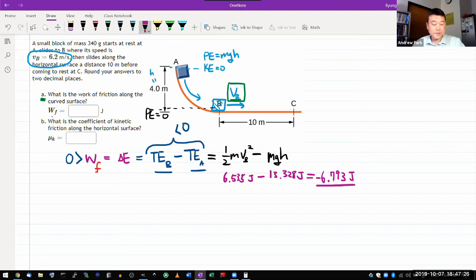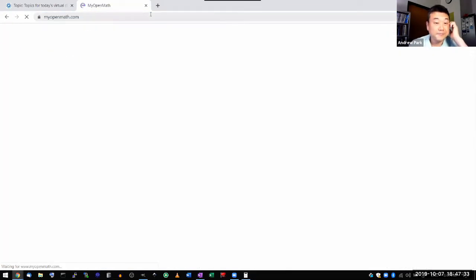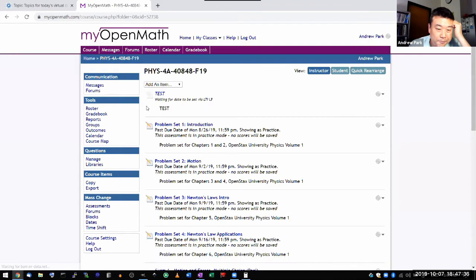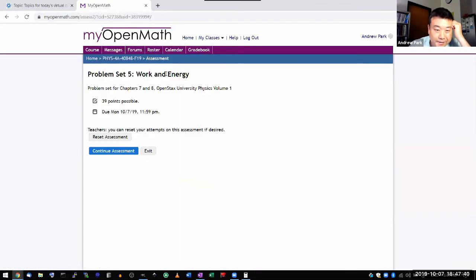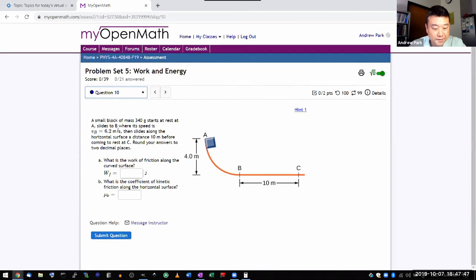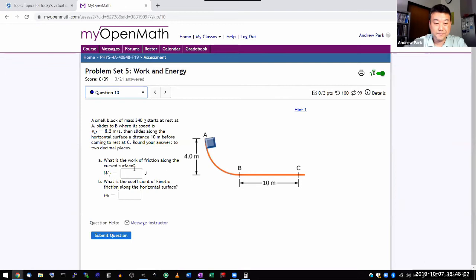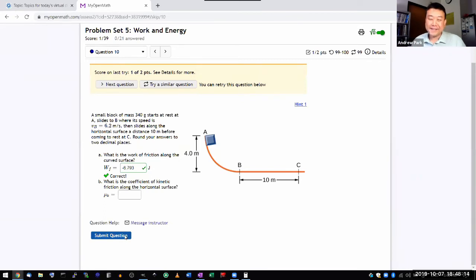Just because this involves numbers, let me actually plug it in. I hope it kept the same version of the question I had, because if it didn't, let's see if it's 340 grams, 6.2. That seems right. Let's plug in the answer. Minus 6.793 joules. Great.